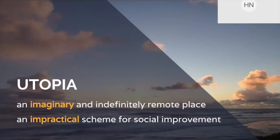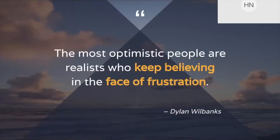I want to end on a note from the social change world. In social change there's a lot of utopic thinking — working towards that better future. The term 'utopia' comes from Sir Thomas Moore and has two definitions: an imaginary place, or an impractical scheme for social improvement. So within the term itself there's a question: can it even happen? I love this quote from Dylan Wilbanks, a very experienced designer: 'The most optimistic people are realists who keep believing in the face of frustration.' Knowing the outcome you're working towards and understanding that some events and activities might fail or change — there are always other avenues forward and ways to empower the people around us to create sustainable change.